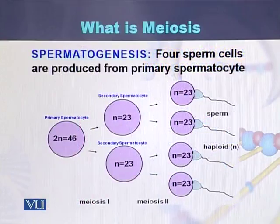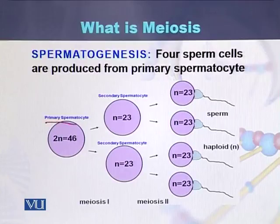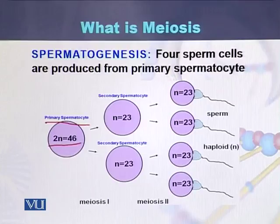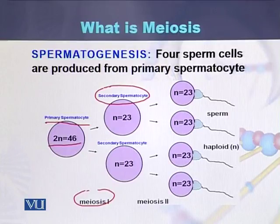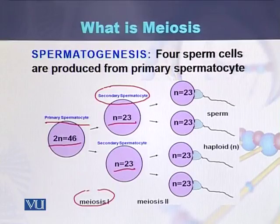Taking the example of spermatogenesis in males: in males there are primary spermatocytes, which contain 2n, meaning 46 chromosomes. As a result of meiosis 1, this primary spermatocyte is converted into 2 cells called secondary spermatocytes. In each secondary spermatocyte, the number of chromosomes is reduced to 23 — that is, reduced to half.